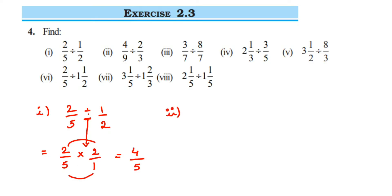For the second question, 4 by 9 divided by 2 by 3: the first fraction remains the same — 4 by 9. Division becomes multiplication. In place of 2 by 3, you take the reciprocal, which becomes 3 by 2. Now try to cancel numbers — yes, we can cancel: 2 and 4, and 3 and 9.